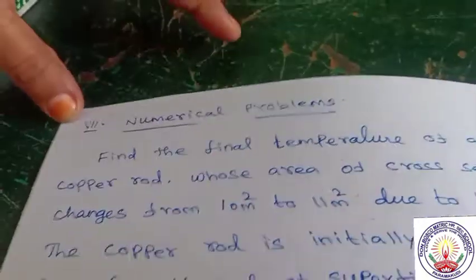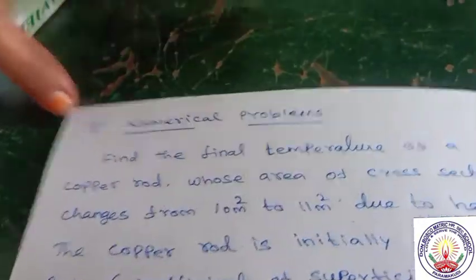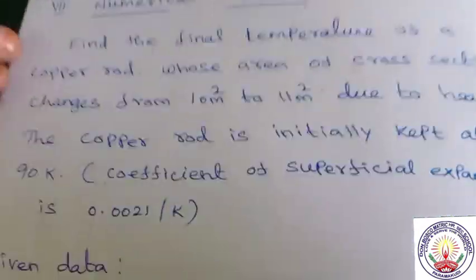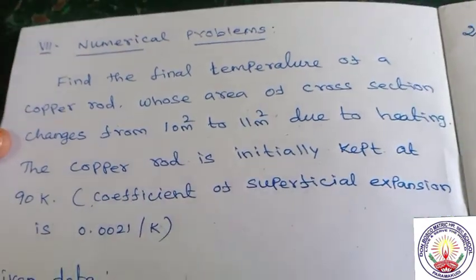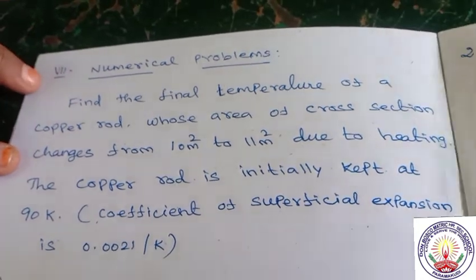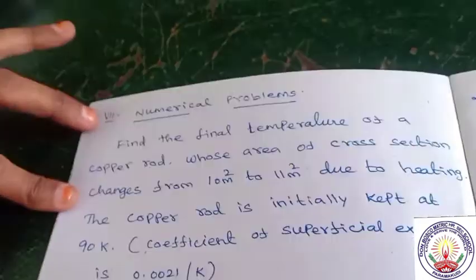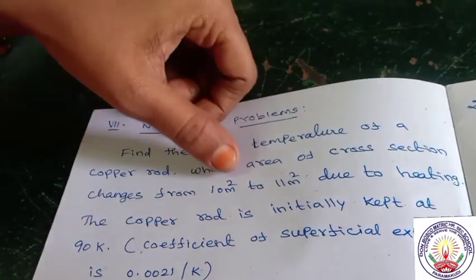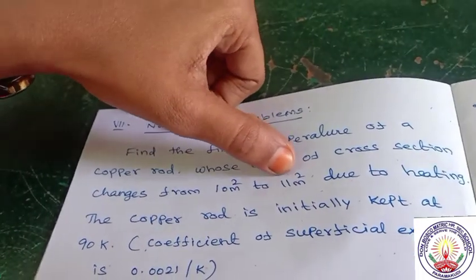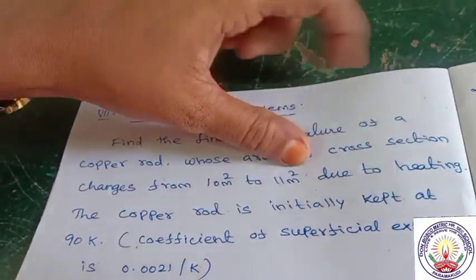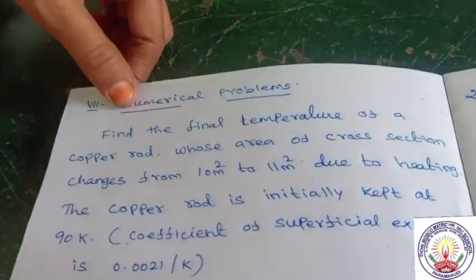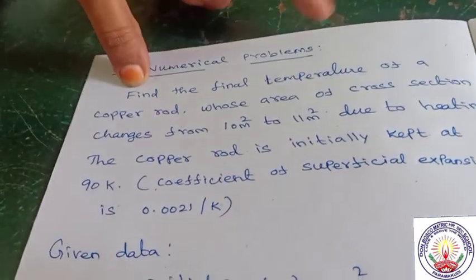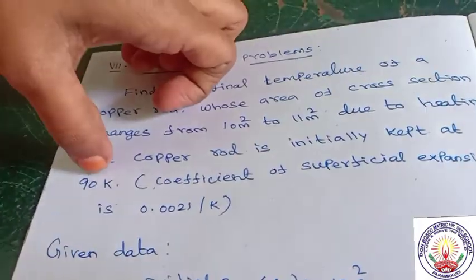Good morning students. Next are numerical problems. Find the final temperature of a copper rod whose area of cross section changes from 10 meter square to 11 meter square due to heating. The copper rod is initially kept at 90 Kelvin.